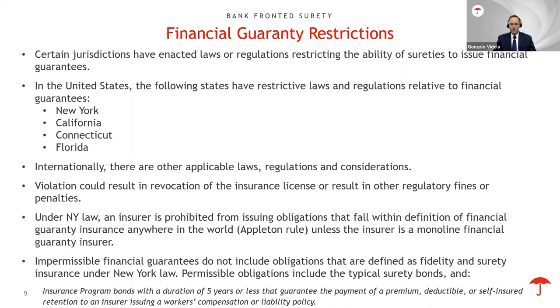Internationally, financial guarantees are defined differently in different countries, but generally, these definitions are narrower than the definition under New York law. So sureties that are licensed in New York typically look at New York law as the bar for compliance purposes. So why is this relevant for this presentation? Well, the reason is that as part of the underwriting process of a bank-fronted surety bond, sureties must review the underlying obligations to confirm they fall under the definition of permissible surety business under the applicable laws and regulations.